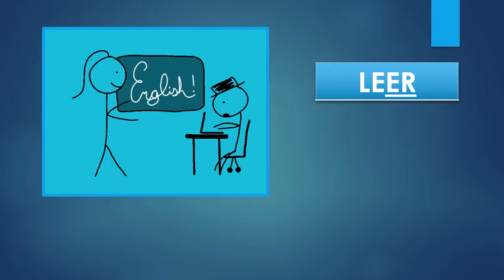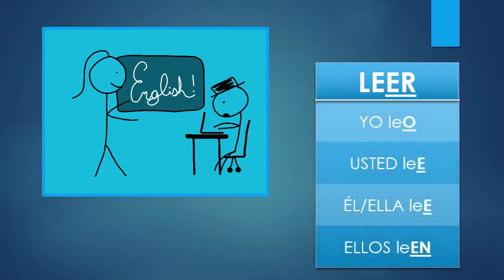Back to my teacher. We have the verb leer. Leer means to read. So yo leo, usted lee, él, ella lee, ellos leen. Leer isn't a perfect option because you do have those two E's next to each other. Remember, every letter gets pronounced in Spanish. So it's not le, it's lee, it's lee, lee. You want to kind of hear both of those E's. Leen. So let's just practice that one more time.